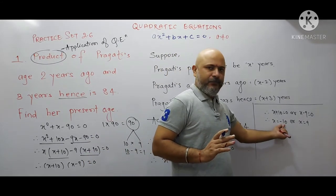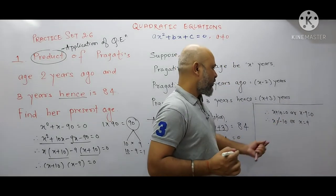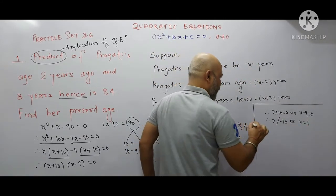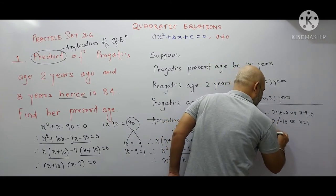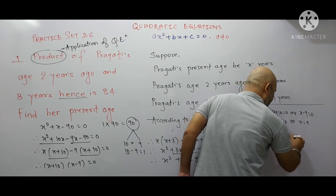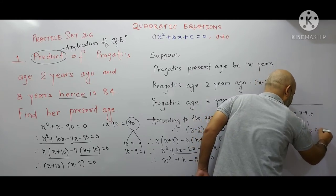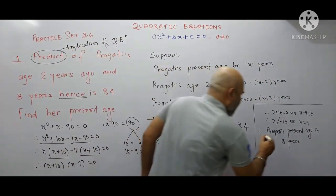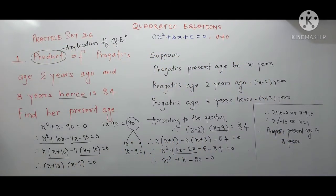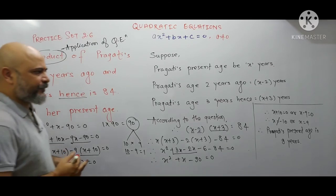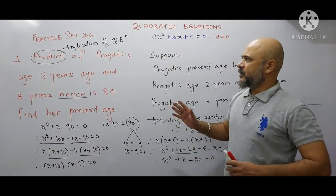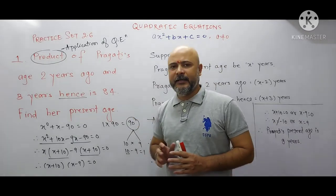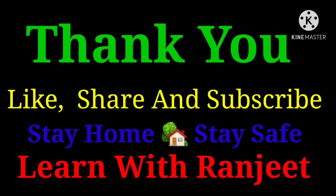We are getting two values: x = −10 and x = 9. But x cannot be negative, so we do not consider x = −10. Therefore x = 9, and Prakriti's present age is 9 years. This is the answer to the first question of Practice Set 2.6, which is fully based on application of quadratic equations.